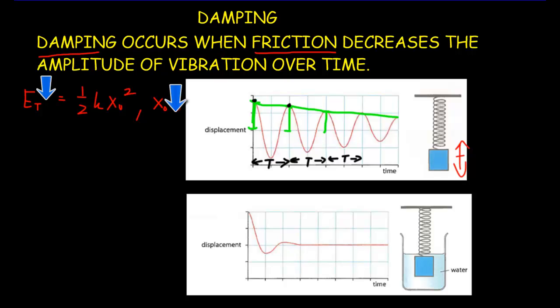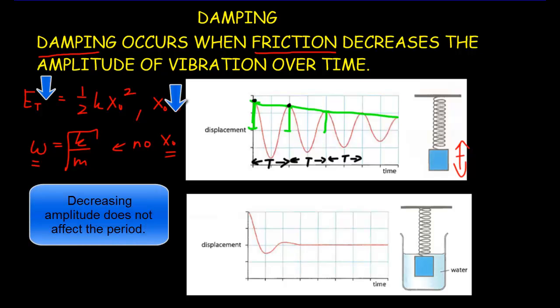And that's because you might recall that omega equals square root of k over m for a mass spring system, and you notice that there's no amplitude in that equation. That means the amplitude doesn't affect the angular frequency, so of course it can't affect the frequency or the period as well.